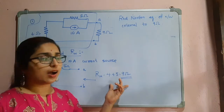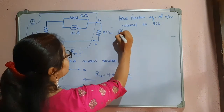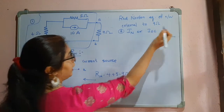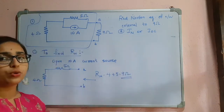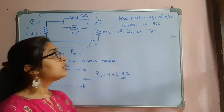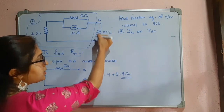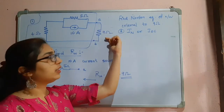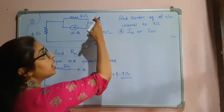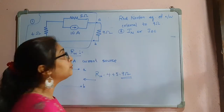Now we have to find the Norton's current IN, which is also called the short circuit current. Norton's current is nothing but the short circuit current. So in this case we have to short the terminals AB, because I am finding the Norton's equivalent from these terminals. I have to short this — then only I will get the short circuit current.